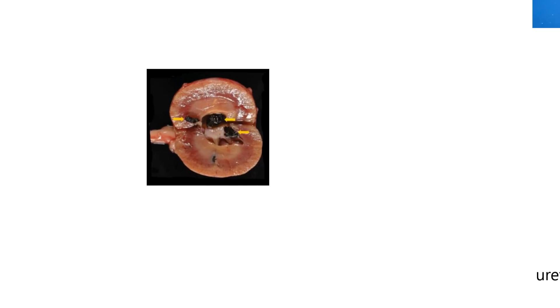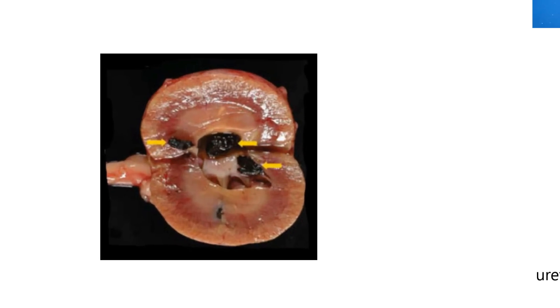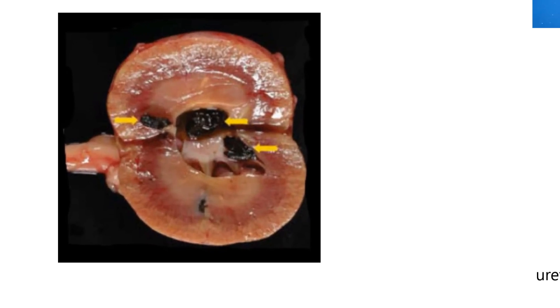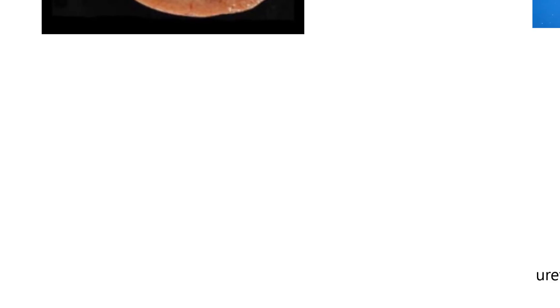Now we're ready to talk about what the kidneys really look like. This happens to be a feline kidney. It shows us the shape, which is normal for the cat — the typical kidney bean shape. This kidney is abnormal in the fact that it's got blood clots in it, depicted by the arrows. So it shows the normal kidney shape, but it's an abnormal kidney. We're just looking at shapes now.